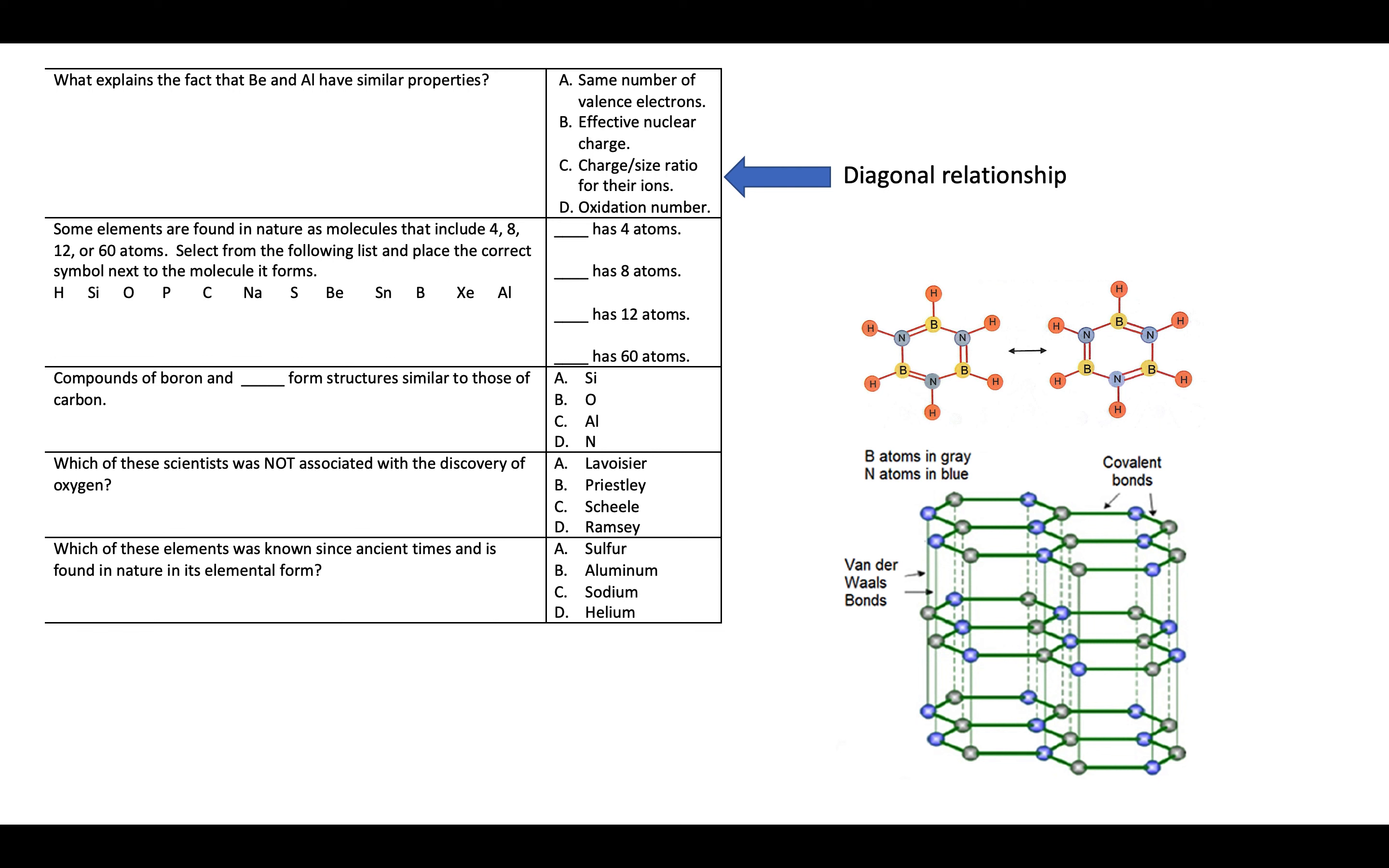The next one, I was trying to get at how boron and nitrogen are isoelectronic with carbon and form similar structures. But I also see some folks looking at this independently and saying, well, silicon and carbon forms similar structures. So I was saying that that was understandable as well. For that next one, not associated with the discovery of oxygen.